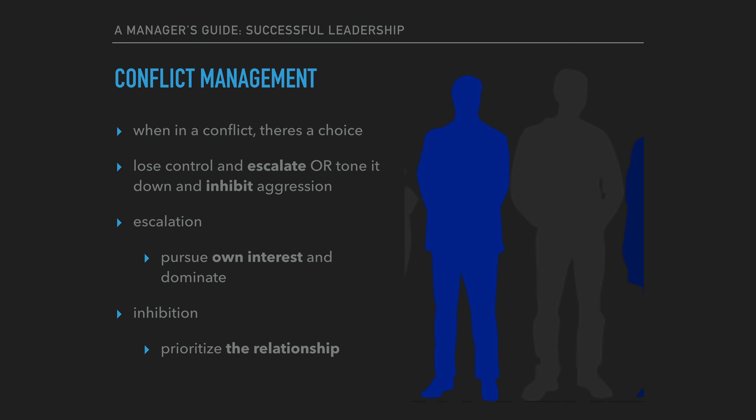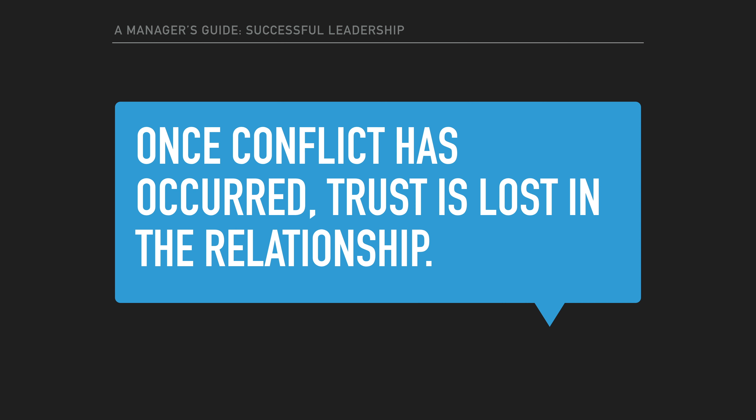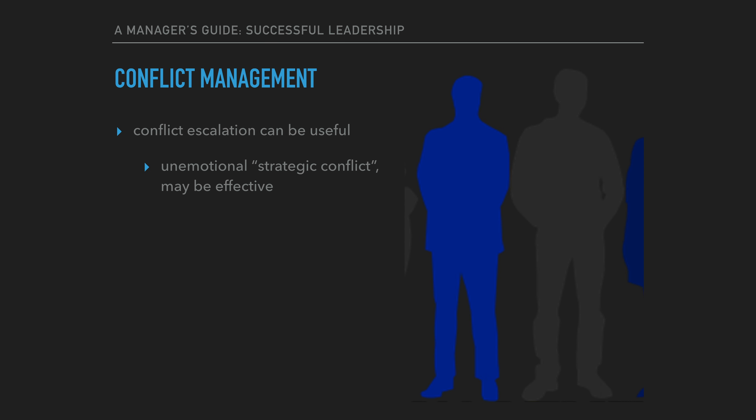However, if they choose to inhibit their aggression, then they are prioritizing the maintenance of the quality of the relationship. Unfortunately, many people give in to their impulses and lose control of conflict situations. Once the conflict has occurred, it leaves a permanent mark — one that cannot be undone. The end result is that trust is lost in the relationship.